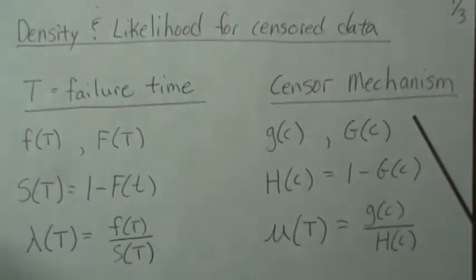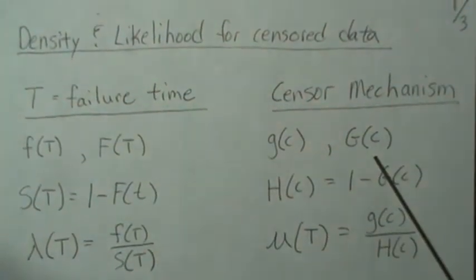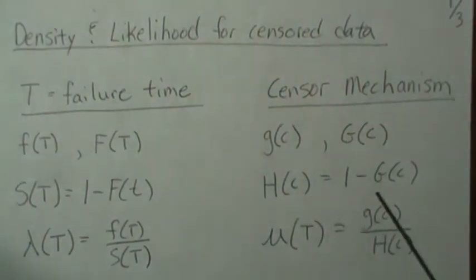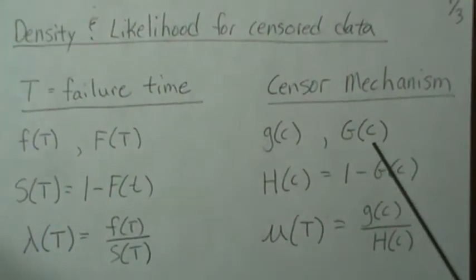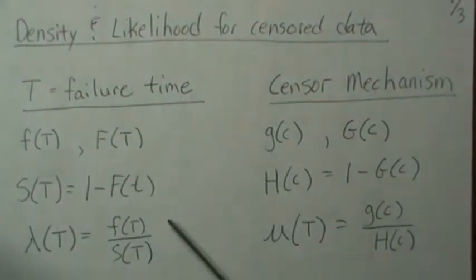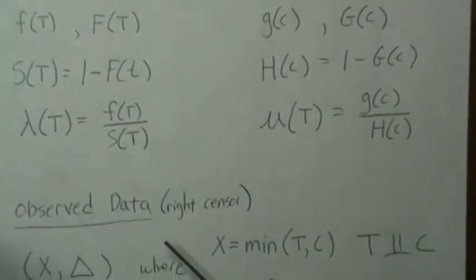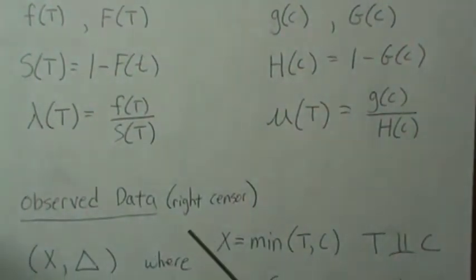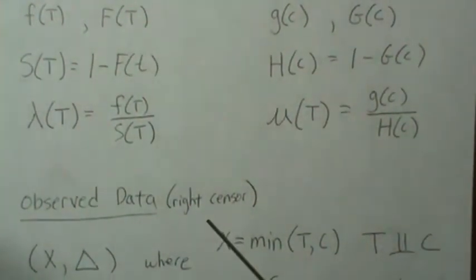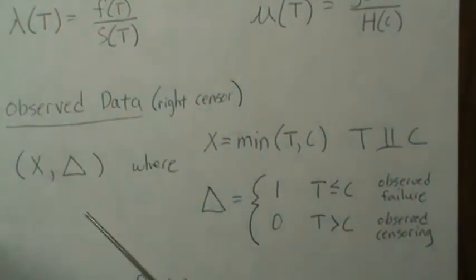And the censoring mechanism also has a density, a CDF (cumulative distribution function), a survival function, and a hazard associated with it. So C is the censoring mechanism and T is the failure time. Our observed data — we're going to just look at right-censored here because that's most of the cases that I have done. But at the very end, I'll write down the likelihood for the general case.